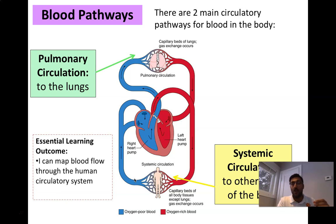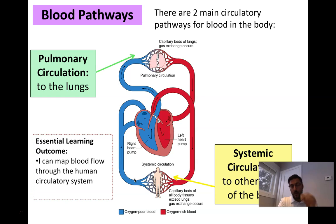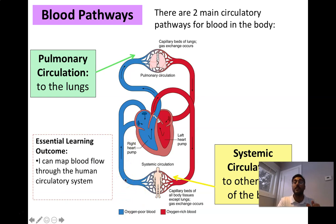Systemic circulation transports blood throughout the entire system of the body — from your hands to your arms to your toes to your ears. In this unit, anything I draw in red is oxygen-rich blood, which we can assume is therefore low in carbon dioxide. Anything drawn in blue is oxygen-poor or deoxygenated blood — high in CO2, not a lot of oxygen.